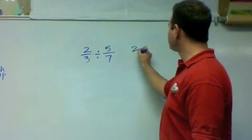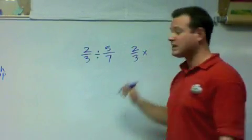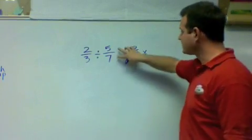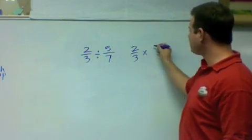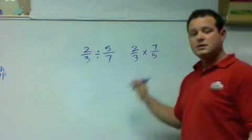So the first, 2/3, multiplied by the reciprocal of the second. So this is 5/7. It becomes 7/5.